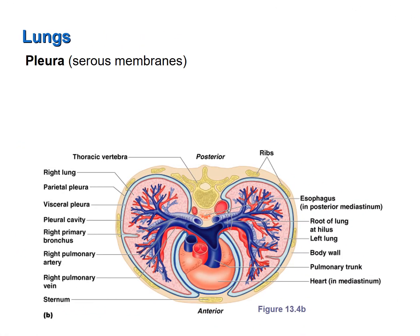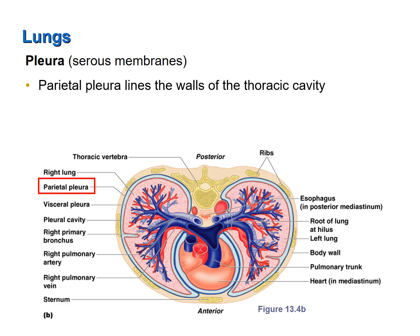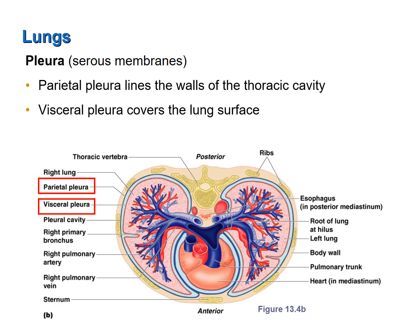All visceral organs of the ventral body cavity are surrounded by a serous membrane. When we looked at the heart, the serous membrane surrounding it is called the pericardium. The serous membrane surrounding the lungs is called the pleural membrane, or simply the pleura. This figure shows a cross section of the thoracic cavity and illustrates the pleural membranes surrounding the lungs. The outer layer is the parietal pleura and it lines the walls of the thoracic cavity. The inner layer is the visceral pleura and it attaches directly to the outer surface of the lungs. A potential space is formed between these two layers, which contains adhesive fluid. That adhesive fluid allows the two layers to slide past one another, but resists the two being pulled apart.